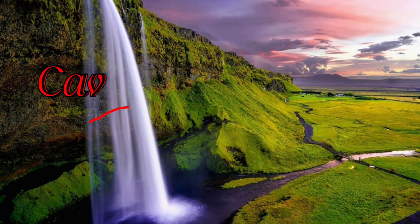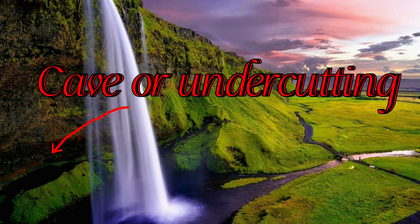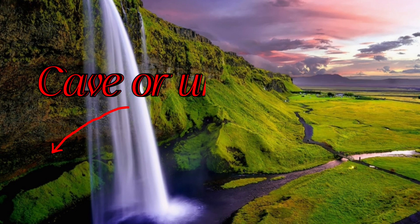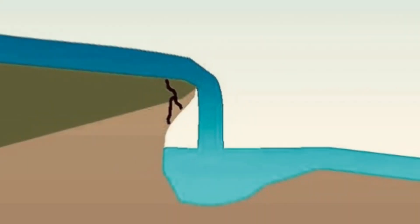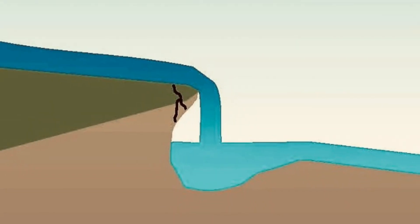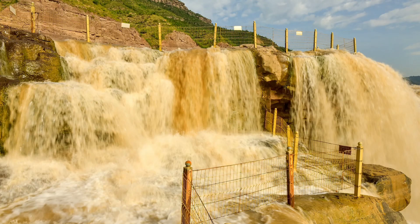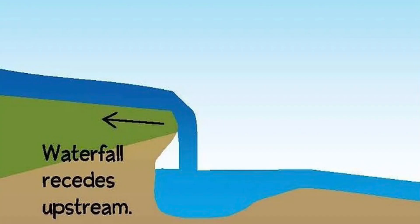Behind the waterfall there is a cave or undercutting, and under the waterfall there is a plunge pool where the waterfall collapses onto. The undercutting leaves the harder rock above unsupported, and eventually it crumbles down.